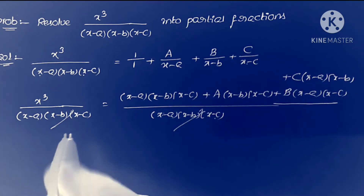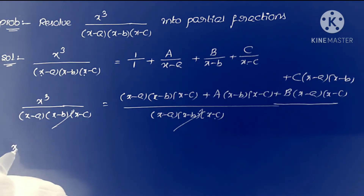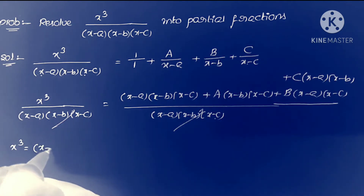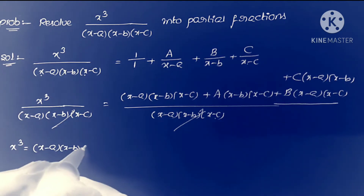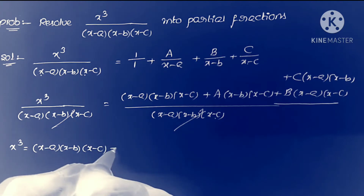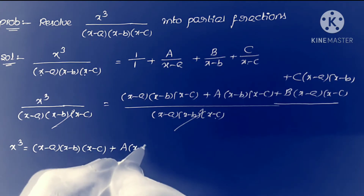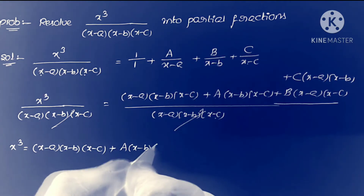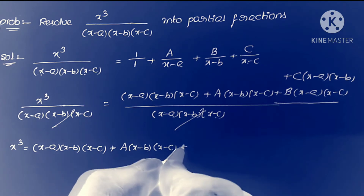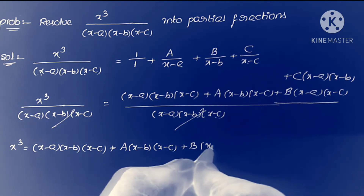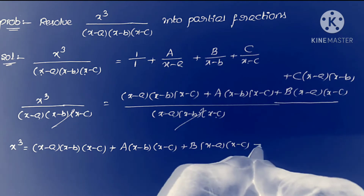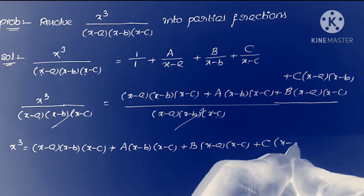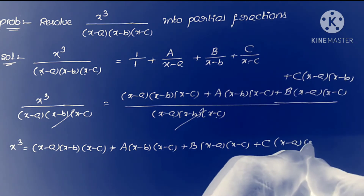After cancelling the denominators, we equate the numerators: x³ = A·(x-b)(x-c) + B·(x-a)(x-c) + C·(x-a)(x-b).